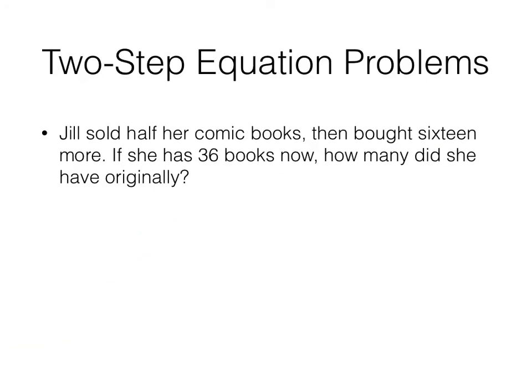Jill sold half her comic books, then bought 16 more. If she has 36 books now, how many did she have originally? Pause it and try it yourself, please. Start with defining a variable, then write your equation and solve. All right. Define a variable. B, number of comic books Jill had in the first place.